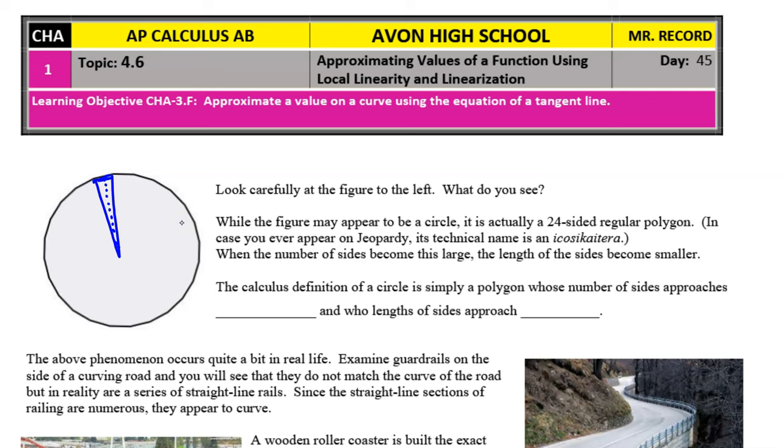In calculus we tend to define things in a very strange way. The calculus definition of a circle is simply a polygon whose number of sides approaches infinity, but yet the lengths of those sides approach zero, and that gives us the illusion of curvature.